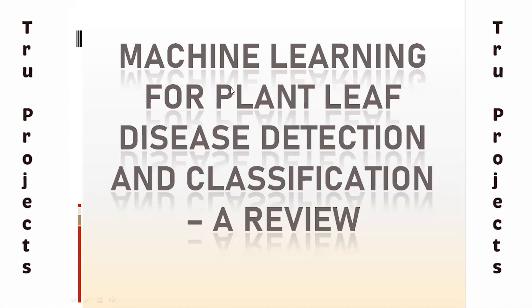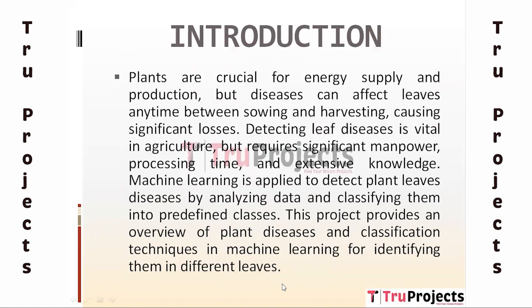In this video we are going to see machine learning for plant leaf disease detection and classification — a review introduction. Plants are essential for energy supply and production, but diseases can affect leaves anytime between sowing and harvesting, causing significant losses. Detecting leaf diseases requires significant manpower, processing time, and knowledge. Machine learning is applied to analyze data and classify diseases into predefined classes. This project provides an overview of plant diseases and classification techniques in machine learning.